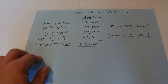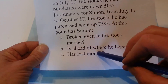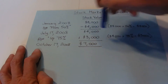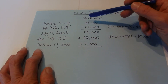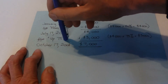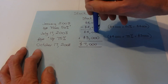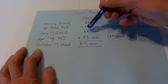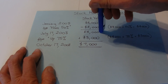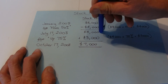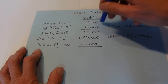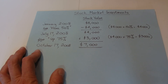So the answer is: he invested $8,000 in January and his stocks are valued at $7,000 in October — the answer is C, he has lost money. It's all to do with percentages: the down 50% was on the $8,000, but the up 75% was only on the $4,000, because from July to October they increased by 75% on that reduced value.